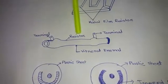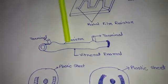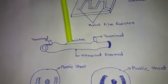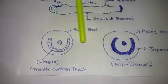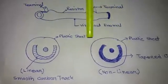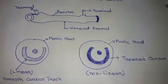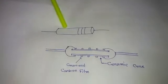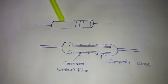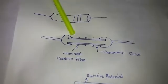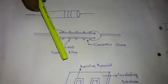This is a terminal resistor and a variable resistor. You can see the variable resistor here. This is the carbon film resistor, and this is the thin film resistor. This is the metal film resistor.